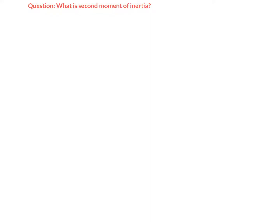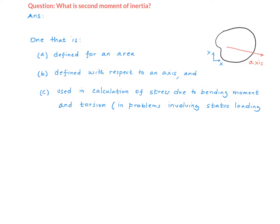The question is: what is second moment of inertia? The second moment of inertia is a sectional property. It is defined for a two-dimensional area, and it is defined with respect to an axis. It is used in the calculation of stress due to bending moment and torsion. It is relevant to the analysis of structural members subjected to static loading. Very often, we seek to calculate the second moment of inertia of a section about either the x-axis or y-axis or both.